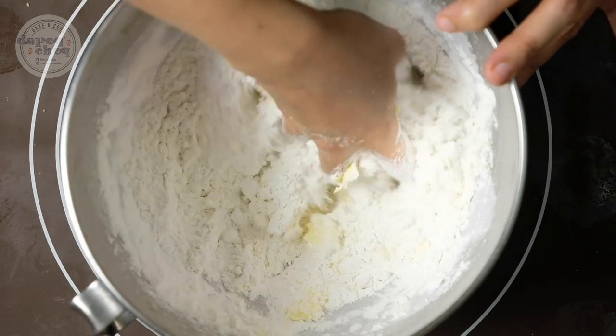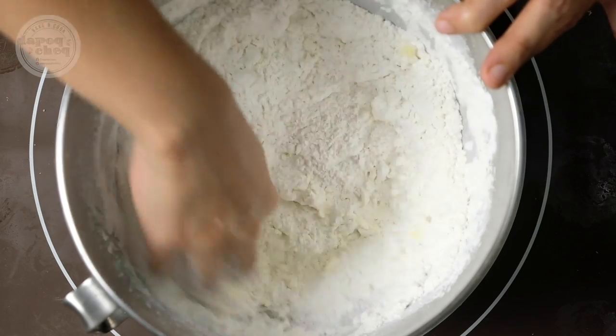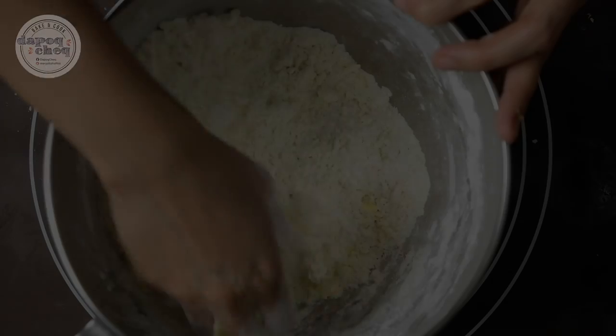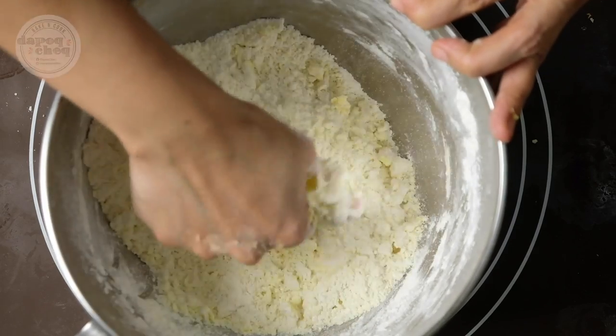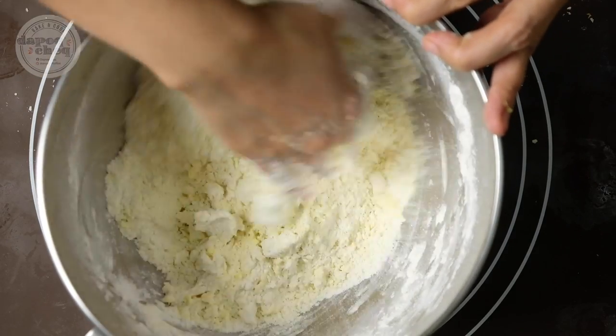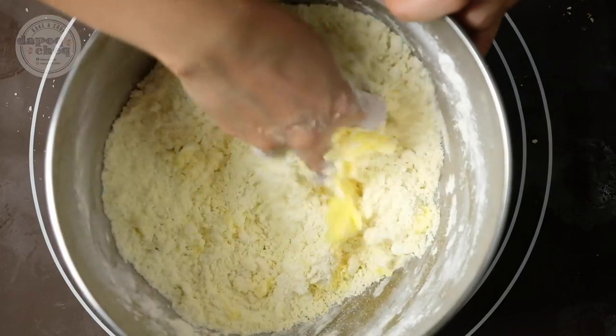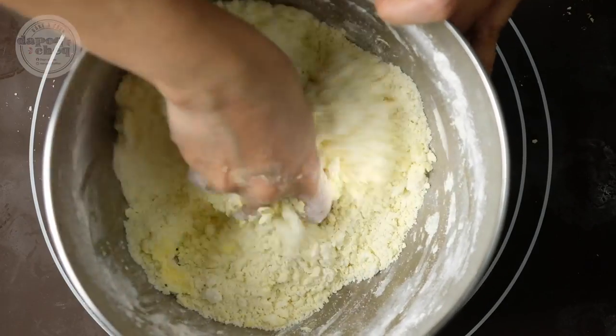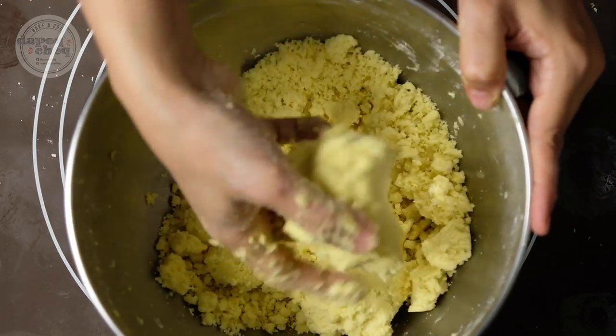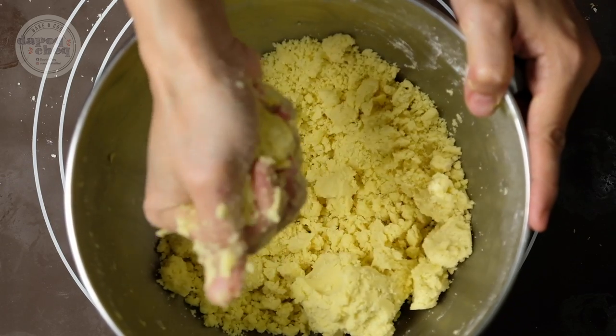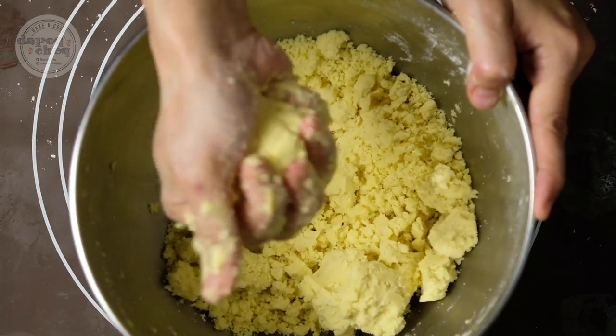Nak gaul dia pelan-pelan macam tu dulu, sampai semua margarin tu bersatu dengan tepung kan. Kita masuk lagi margarin dia sikit-sikit, sampai dia nanti kita boleh kepak dia tau, kita boleh bulat dia. Tepung beras kita tu dengan margarin, kita nak dia jadi macam ni lah. Kita boleh buat bulat-bulat macam ni kan, buat bulat-bulat macam ni, 6 biji.